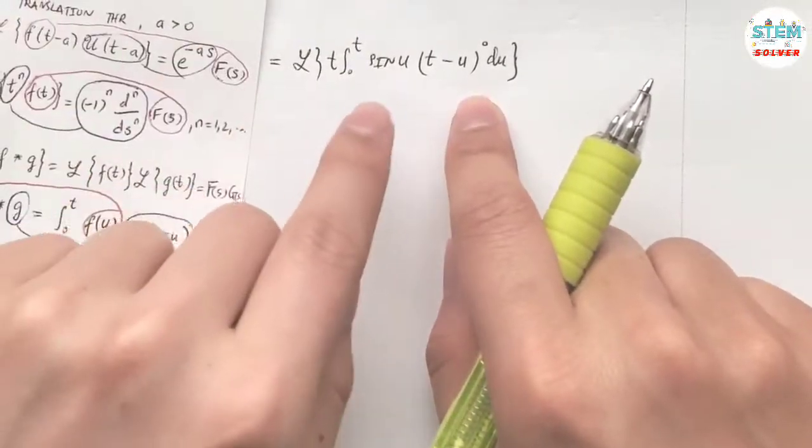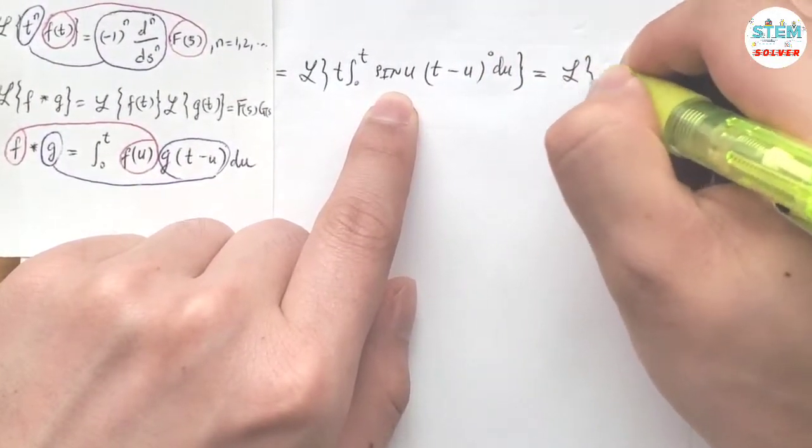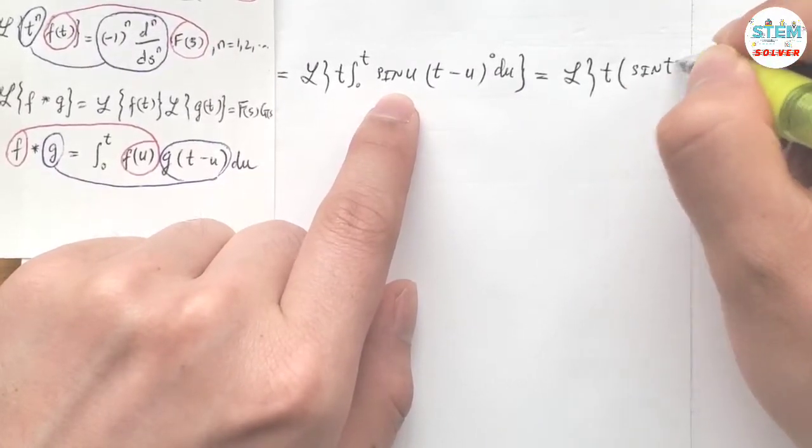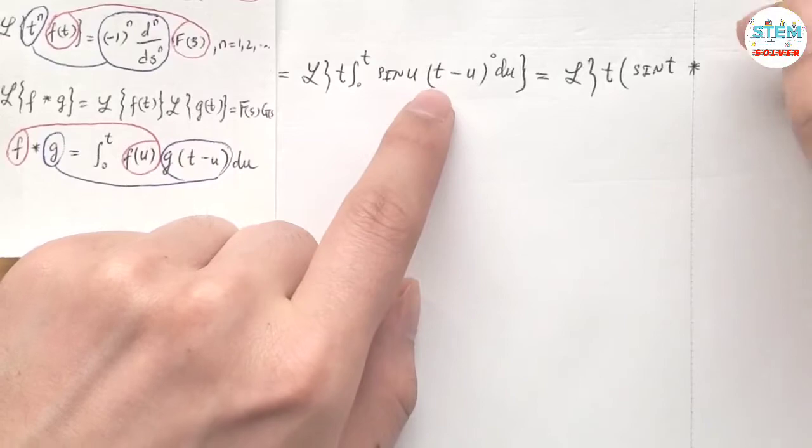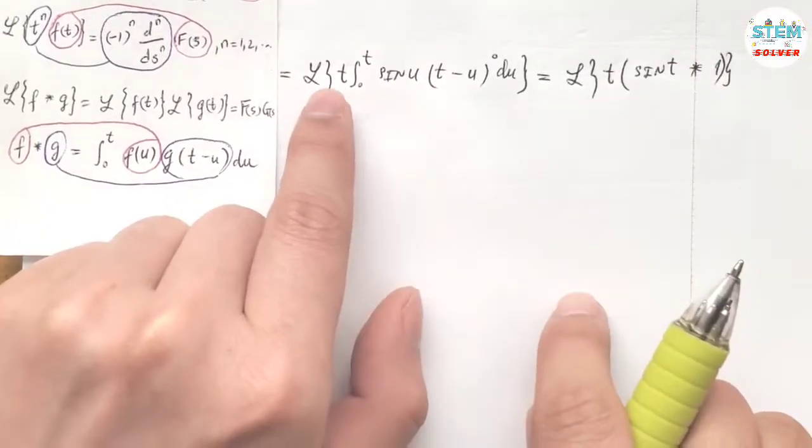So now, we do have the function in terms of u and t minus u, so this can be rewritten as psi of t convoluted with 1. And don't forget the t up front.